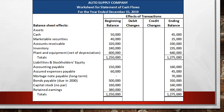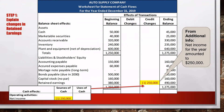We begin our worksheet by including columns for beginning and ending balances and two columns for the debit and credit change in each account. Next, we enter the first information about net income for the period. Net income increases retained earnings on the balance sheet, so we enter the $250,000 in the credit column on the retained earnings row, labeled item 1. Net income is considered a source of cash, so it is entered in the sources of cash column with the description 'net income' and the amount.